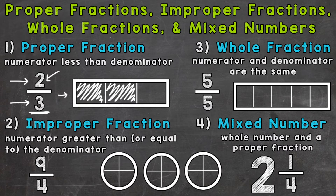Now number two: improper fractions. The numerator is going to be greater than or equal to the denominator. In the case of our example, we have nine-fourths — the top is larger in value than the bottom. That's what we call an improper fraction.